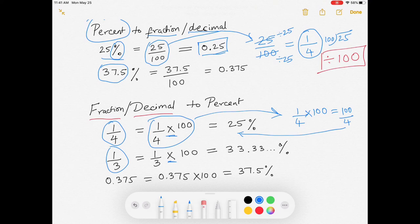Similarly, if I'm doing 1 over 3, I do the same thing. It's 100 over 3, and when I divide it, it will give me 33.33%.